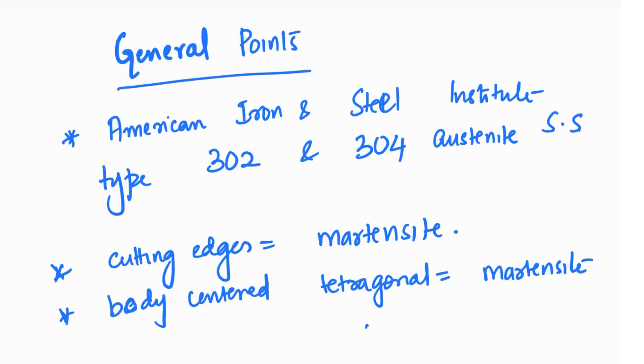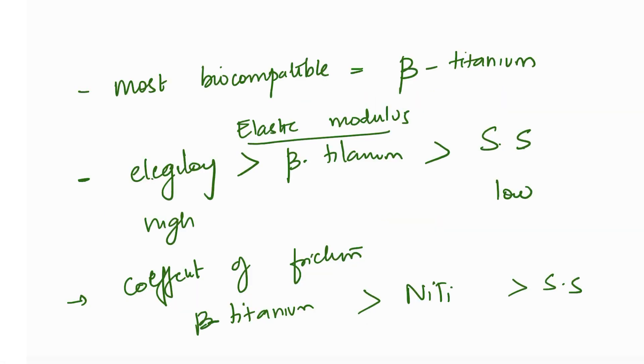Other general points you should know: the wires we use in orthodontics are generally from the American Iron and Steel Institute (AISI), type 302 and 304 austenitic stainless steel. The cutting edges of orthodontic instruments are martensite with body-centered tetragonal structure.